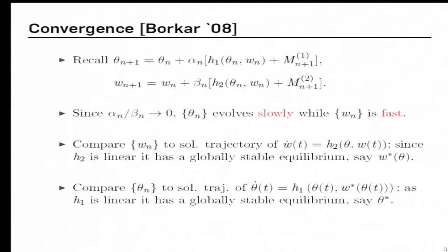The next idea given over here is to compare this sequence of iterates to the suitable solution trajectory of this ODE. Here again, this h1 is precisely this h1, and theta of t is obtained by replacing this with theta of t. And this iterate over here is replaced with the solution of this obtained by replacing theta with theta of t. Okay, and again, because h1 is a linear function, this ODE would have a globally stable equilibrium. Let us denote by theta star.